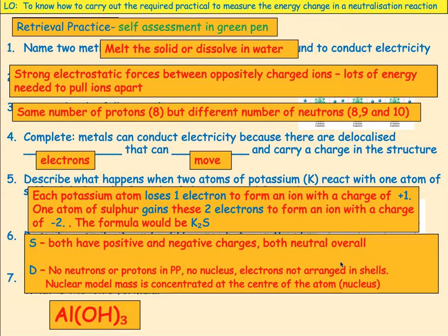The formula for aluminium hydroxide is Al(OH)₃. We need to treat the hydroxide ion as a whole thing together and multiply it by three.